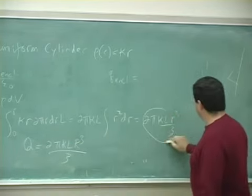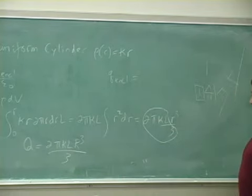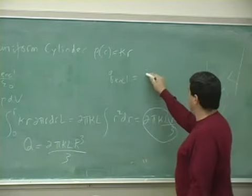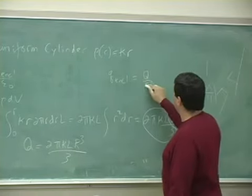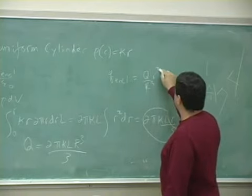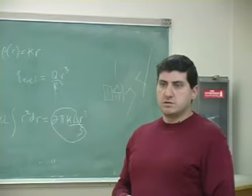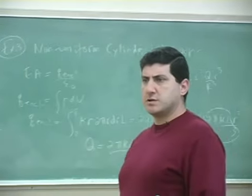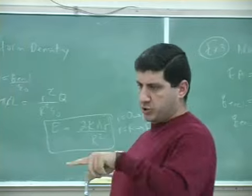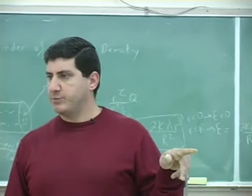This whole thing is going to disappear. 2πκL over 3 is going to equal Q over R cubed times a little r cubed.